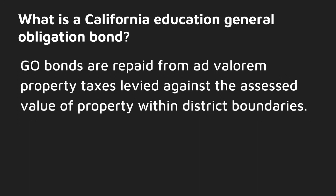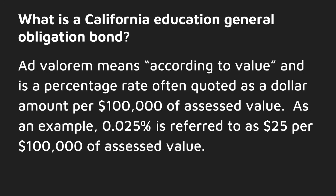GEO bonds are repaid from ad valorem property taxes levied against the assessed value of property within district boundaries. Ad valorem means according to value, and is a percentage rate often quoted as a dollar amount per $100,000 of assessed value. As an example, 0.025% is referred to as $25 per $100,000 of assessed value.